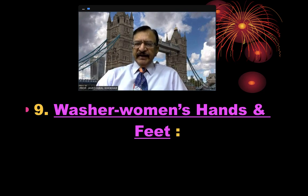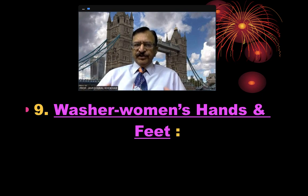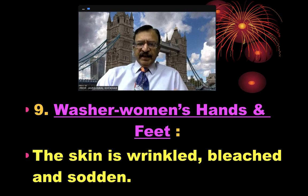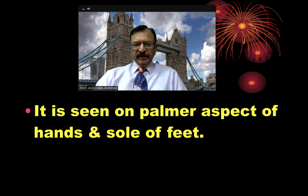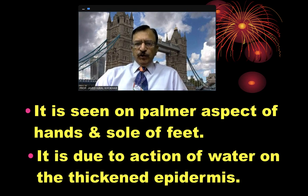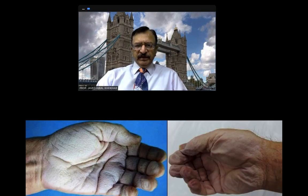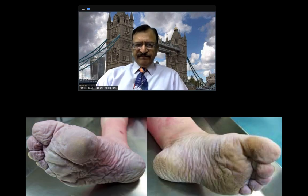The skin appears as washer women's hands and feet — the skin is wrinkled, bleached and sodden. It is seen on the palmar aspect of the hands and the soles of the feet, and is due to the action of water on the thickened epidermis. It is not a sure sign of drowning but it tells that the body has been in water for a long time. You can see the hands and feet are sodden.